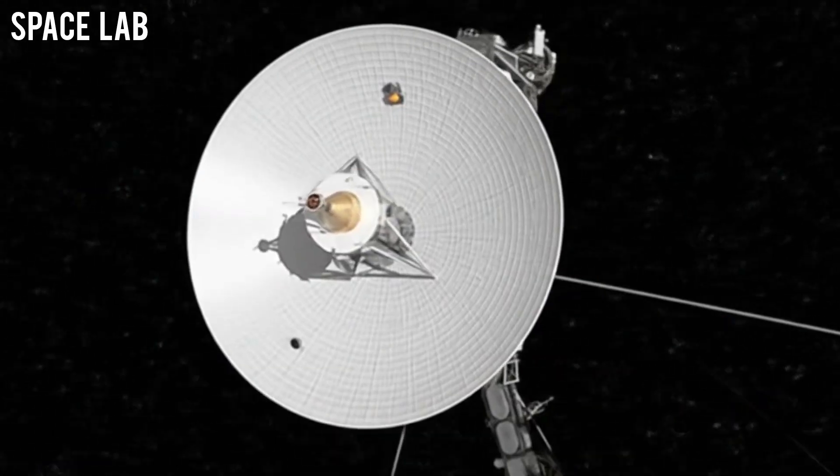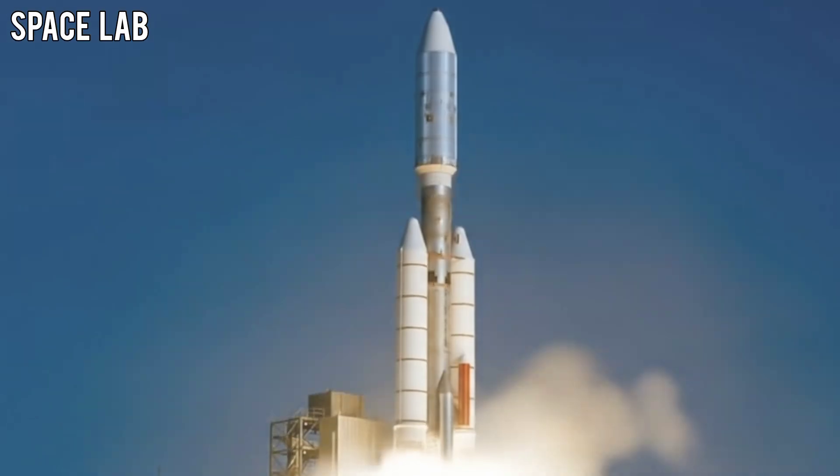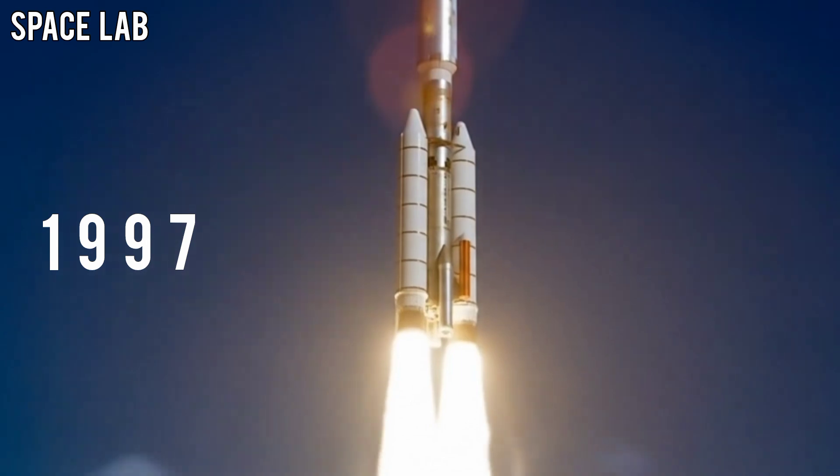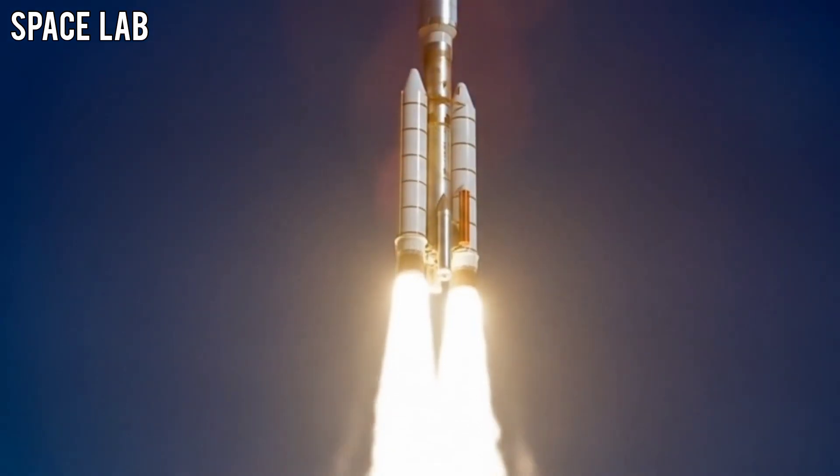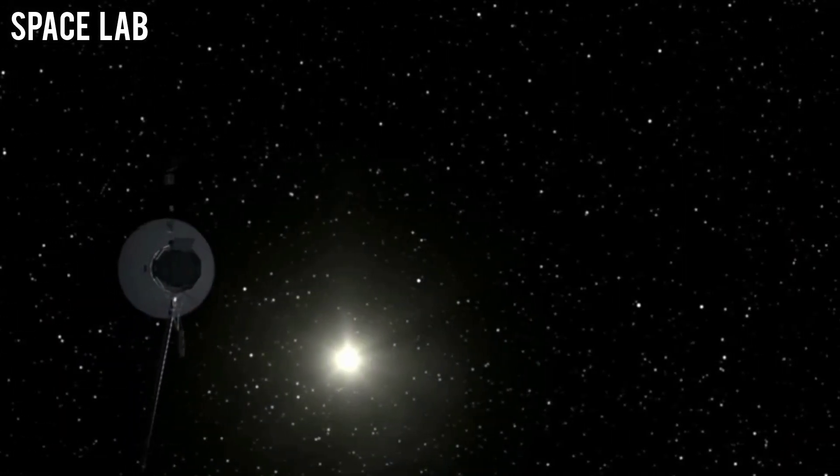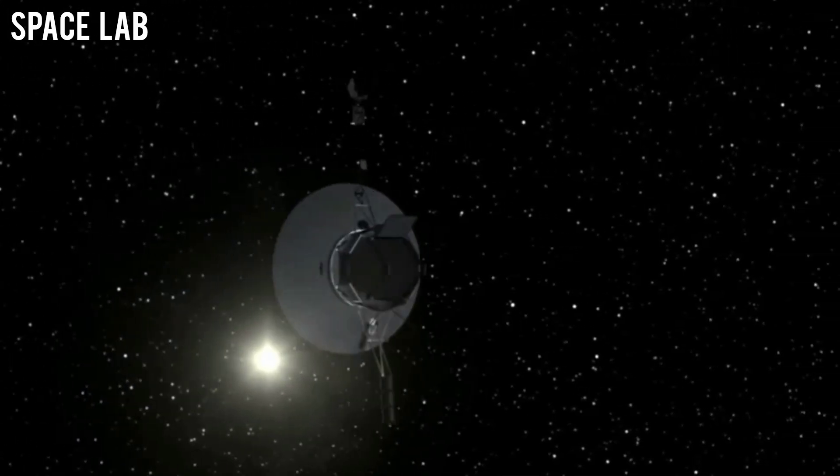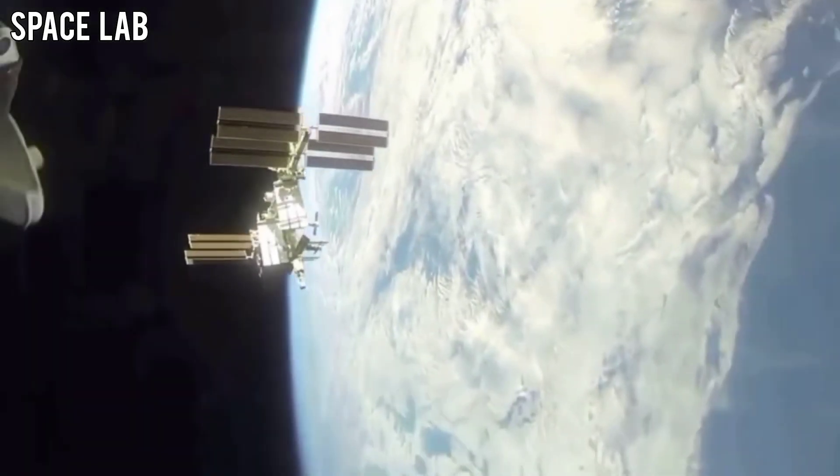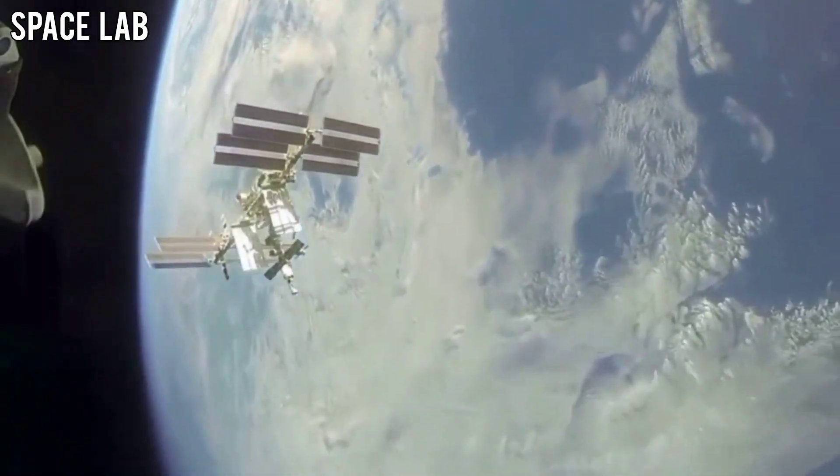For decades, Voyager 2 had drifted silently through the darkness, a lone emissary from Earth launched in 1977. Its mission was simple: to explore the outer planets and send data back to humanity. After completing its grand tour of Jupiter, Saturn, Uranus, and Neptune, the spacecraft crossed into the interstellar unknown, still sending faint signals back home.